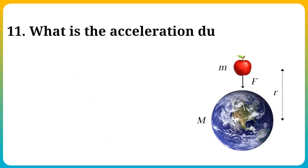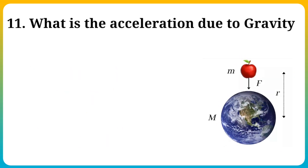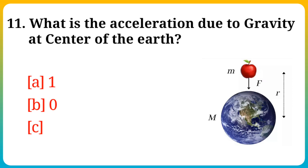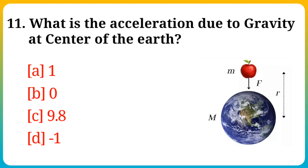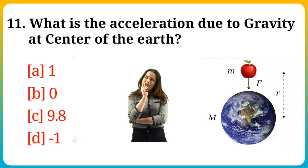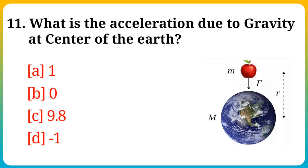Question number 11. What is the acceleration due to gravity at the center of the earth? Option A: 1, B: 0, C: 9.8, D: minus 1. Answer is option B: 0.